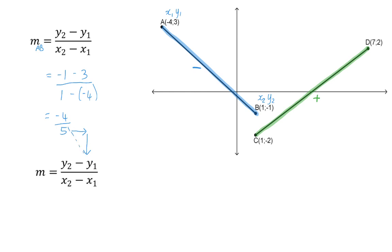And now I'm going to use the formula again to determine the gradient of CD. Here I'm going to start by substituting the y value of D and subtracting that of C, and therefore I'm going to use the x value of D first and subtract that of C. This will give me a gradient of 4 over 6, which can be simplified to 2 over 3.